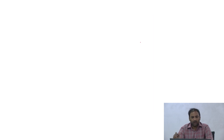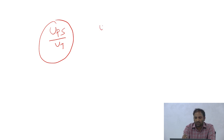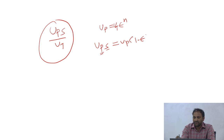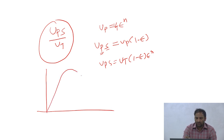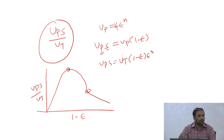We discussed the non-dimensional settling flux u_ps by u_t. Since u_p equals u_t times epsilon to the power n, the superficial settling velocity u_ps equals u_p times (1 - epsilon), giving u_ps equals u_t times (1 - epsilon) times epsilon to the power n. If you plot u_ps by u_t versus (1 - epsilon), the function has a specific shape - I made a mistake last class: the x-axis is (1 - epsilon), not epsilon.